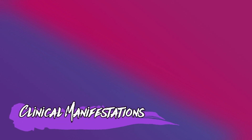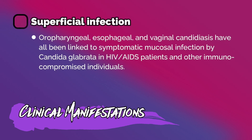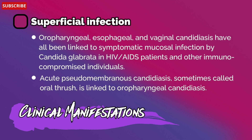Now let's learn about the clinical manifestations of Candida glabrata. Superficial infection — oropharyngeal, esophageal, and vaginal candidiasis — has all been linked to systemic mucosal infection by Candida glabrata in HIV/AIDS patients and other immunocompromised individuals. Acute pseudomembranous candidiasis, sometimes called oral thrush, is linked to oropharyngeal candidiasis.